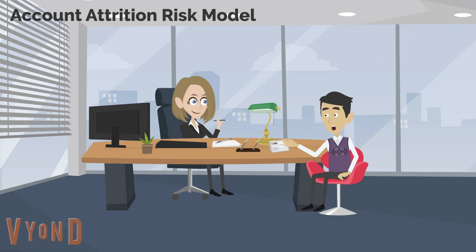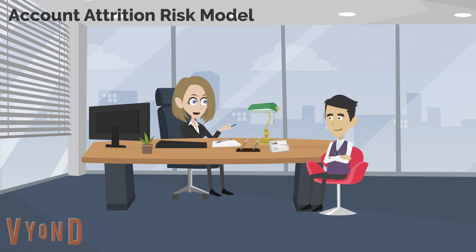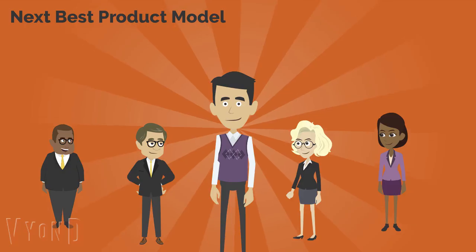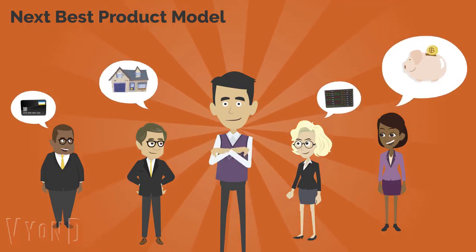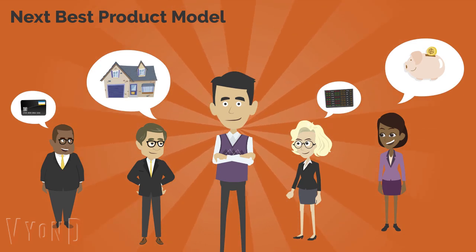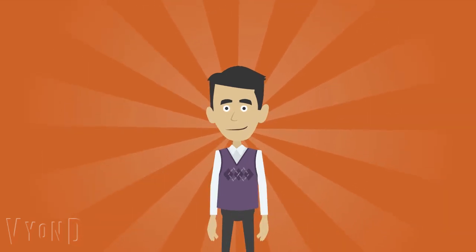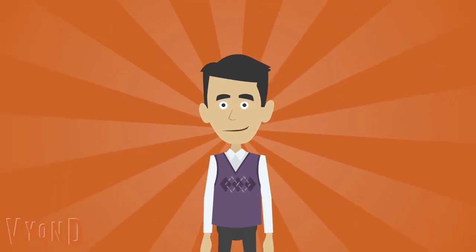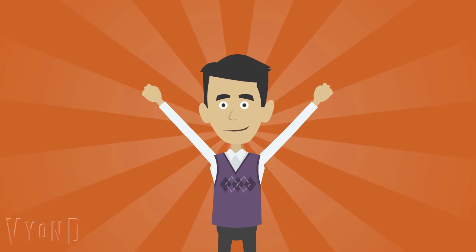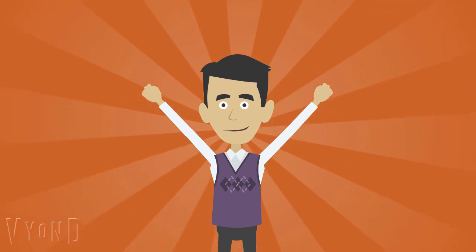The account attrition risk model predicts if and when a client is on the verge of closing a given bank account, but would still maintain other banking accounts and services and continue doing business with the bank. The next best product model can recommend the products or services a contact is most likely to use, which is incredibly valuable when it comes to personalizing marketing offers.